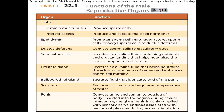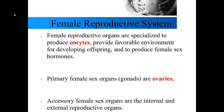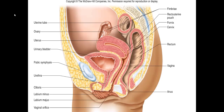Now we'll move on to the female reproductive system. The female reproductive organs are specialized to produce eggs or oocytes, provide a favorable environment for developing offspring, and produce various sex hormones. The primary sex organ — the gonad — for the female are the ovaries. Just as with the male, anything within the female reproductive system that is not the ovaries, whether internal or external, is considered to be an accessory structure.